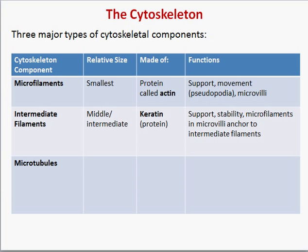Intermediate filaments are the intermediate-sized cytoskeleton components. They're made out of a protein called keratin and they provide support. They also provide more rigid support to structures like the microvilli — the microfilaments that extend the microvilli anchor to intermediate filaments inside the cell.